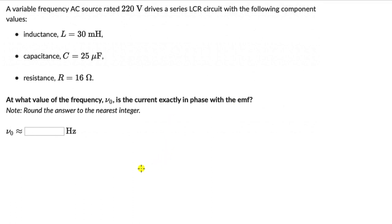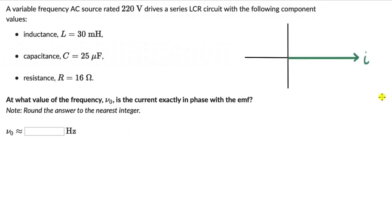Now let's try to understand what this question is asking. The key is the phase. The final statement says: at what value of the frequency is the current exactly in phase with the EMF or the supply voltage? Let's try and visualize it using a phasor diagram. At any value of frequency, there could be some current flowing in the circuit, so let's draw this vector to use as a reference for other voltages.